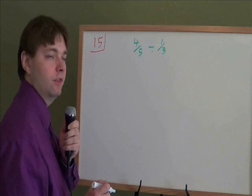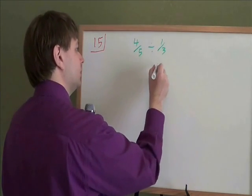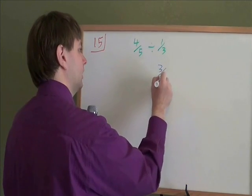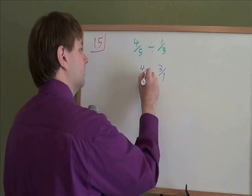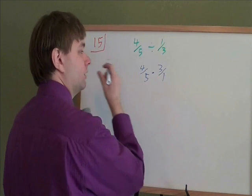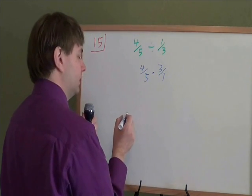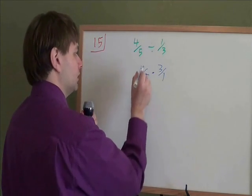4 fifths divided by 1 third. Anytime you are dividing fractions, what you have to do is flip the second one over and multiply. Dividing by 1 third is the same as multiplying by 3 over 1. And multiplying fractions is easy. You don't need a common denominator or anything. You just multiply straight across.